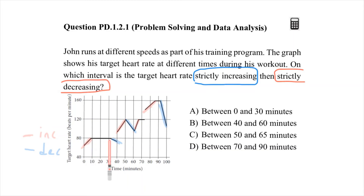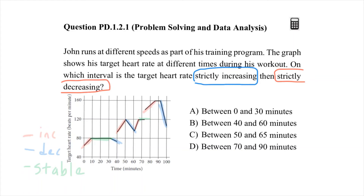Some lines are not increasing or decreasing — they are flat. We call these stable. There are several stable lines on the graph. I'll highlight the stable segments: this one is stable, this one is stable, and this one is also a stable line.